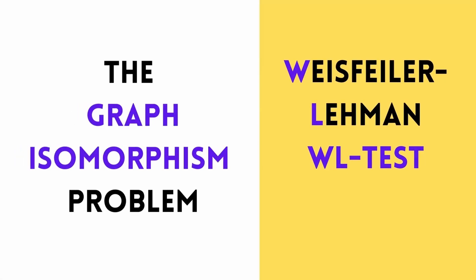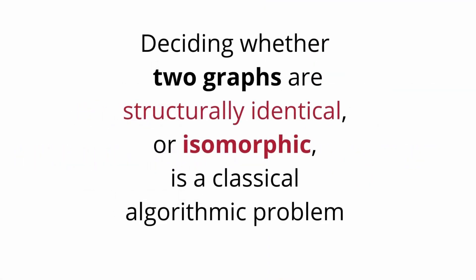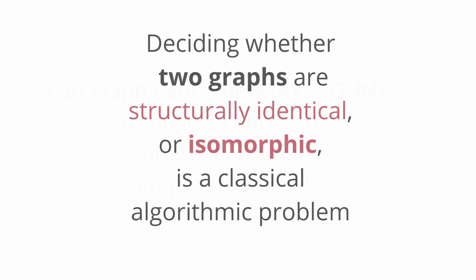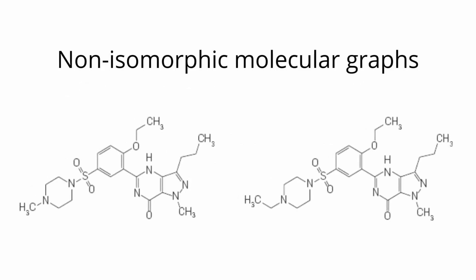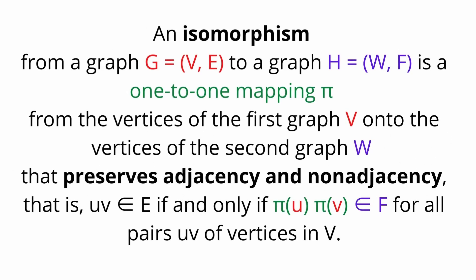The graph isomorphism problem, or the WL test. To decide whether two graphs are structurally identical or isomorphic is a classical problem. Now imagine you have these two molecules — are they isomorphic or non-isomorphic? An isomorphism from a graph G to a graph H is a one-to-one mapping pi from the vertices of the first graph onto the vertices of the second graph that preserves adjacency and non-adjacency. This is an important definition of isomorphism that we're going to use.